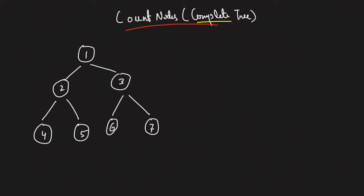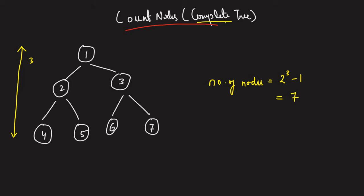We're going to use a property of the complete tree. As you can see, this tree is completely filled — none of the levels have any node shortage. So if the height of the tree is three, the number of nodes is two to the power three minus one, that's seven. So we're getting the idea that if I can somehow compute the height of the tree, I can say the number of nodes is 2^h - 1. But it might happen that some portion is not present because it's a complete tree — so we're going to deduce an algorithm that uses this height property smartly.